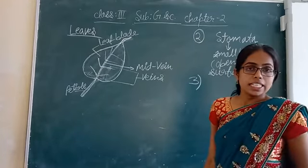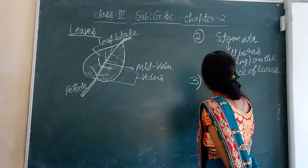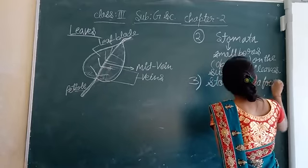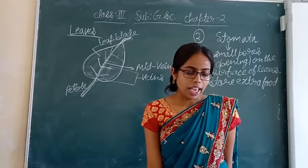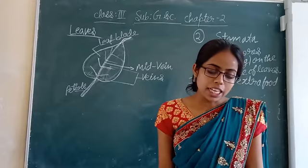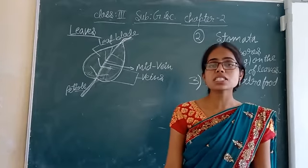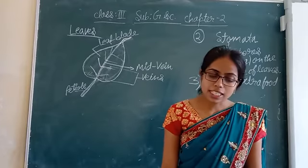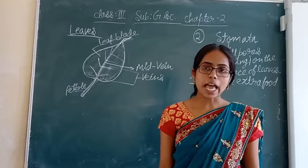The third function: leaves of some plants store extra food in the form of starch, which we eat as vegetables. Examples include cabbage, spinach, and lettuce. We eat the leaves of these plants as vegetables.